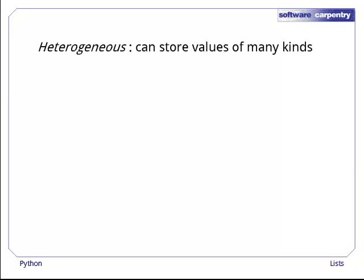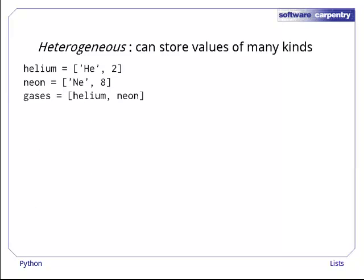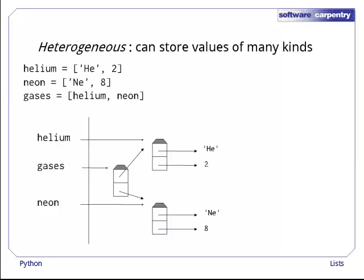The second important characteristic of lists is that they're heterogeneous, i.e., they can store values of many different types. This makes them different from arrays in C and Fortran, whose entries all have to be the same type. Here, for example, we have created two lists, each of which contains both a string and an integer. This picture shows what's in memory after the second list is created. Each list stores a reference to a string and a reference to an integer. Lists can even store references to other lists. We can, for example, create a list gases, whose two entries are references to the lists helium and neon. There's nothing magical about this. If we update our picture of what's in memory, we simply have another two-element list that stores references to other things we've already created. Nesting data structures like this allows us to do some very powerful things. It can also be a rich source of bugs, so we will delay discussion of the details to a later episode.